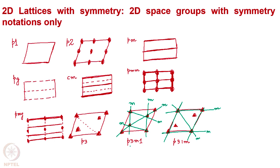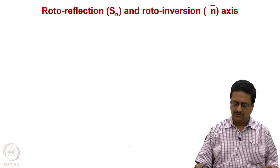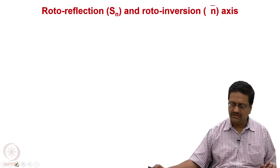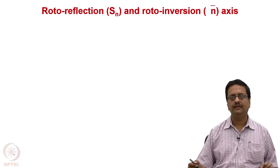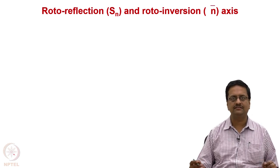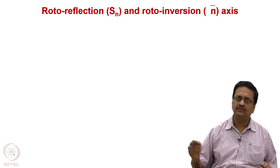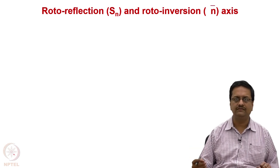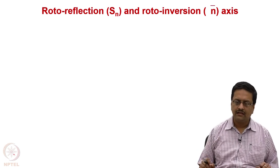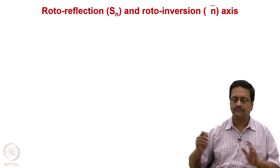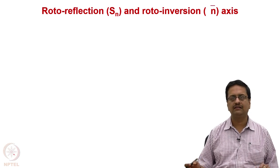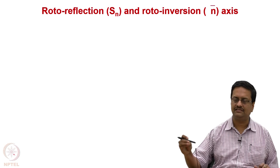Why do we need to know all these? Because in three dimensions we also have space groups of this kind, and the location of the mirror plane changes the three-dimensional orientation or arrangement of molecules in those lattices, giving rise to two different crystal structures. At some point in the previous lecture, we discussed about the Sn and n-bar axes. Sn is a rotoreflection axis in molecular symmetry, while in crystallography a similar axis is called rotoinversion, written as n-bar.